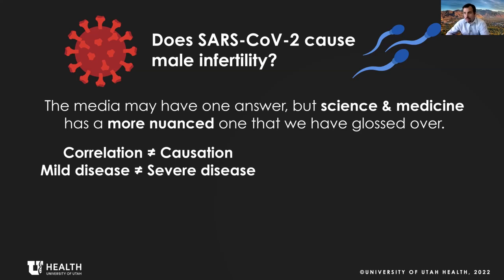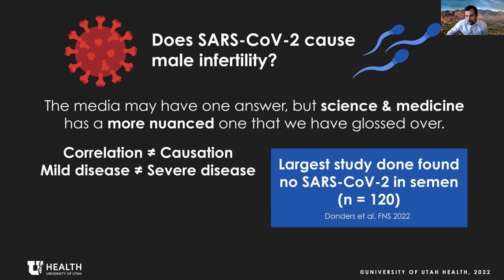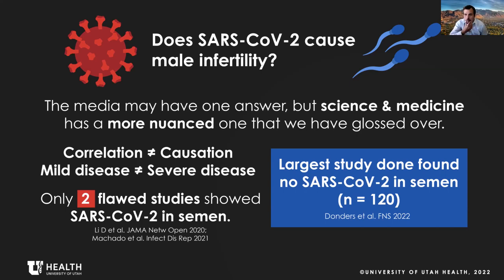Anyone in the ICU and critically ill will have a significant impact on their reproductive ability — men make about a thousand sperm per second, the highest throughput process in the human body, and any severe illness can disrupt that. The largest study ever done found no SARS-CoV-2 in semen — conducted in 120 patients. Our study from the spring of 2020, in a cohort from Wuhan, found no evidence of SARS-CoV-2 in semen. Only two studies — which I believe are methodologically flawed — showed SARS-CoV-2 in semen, and I'll explain why they're flawed.